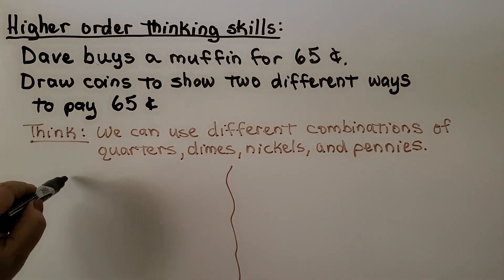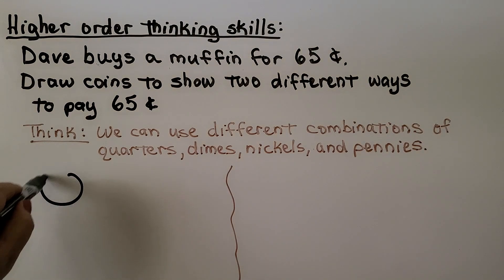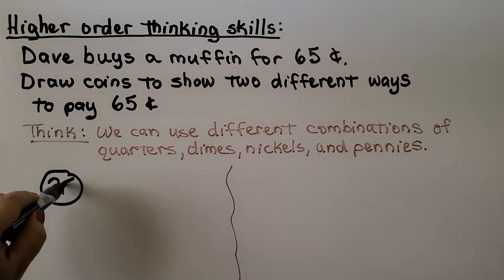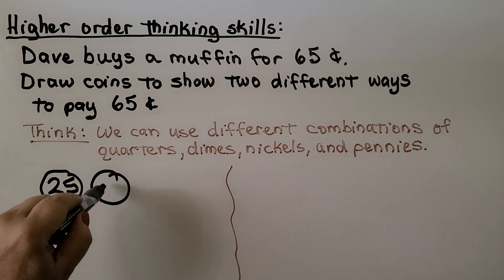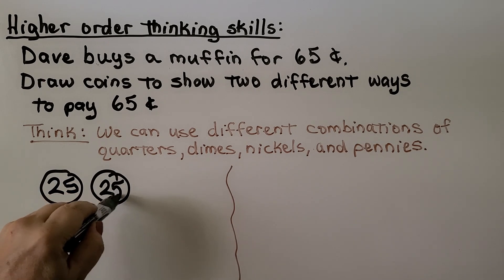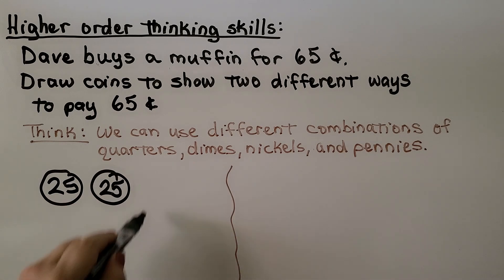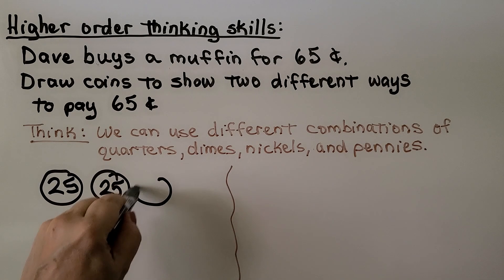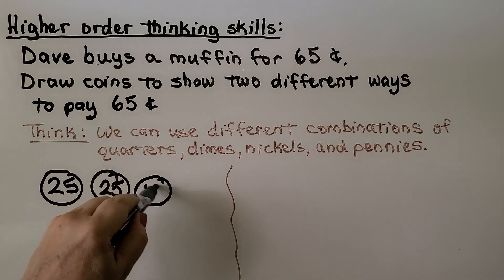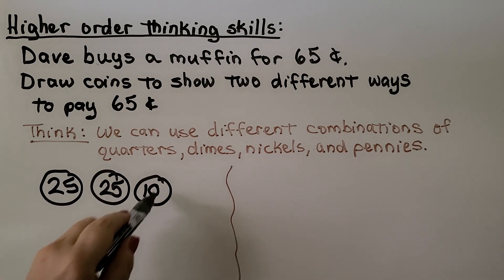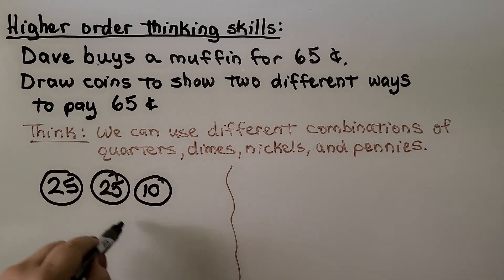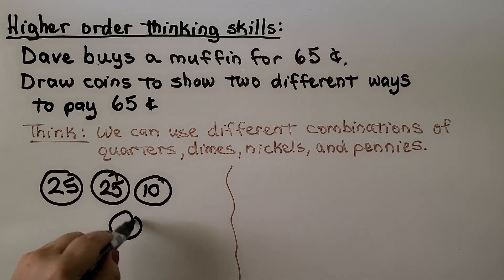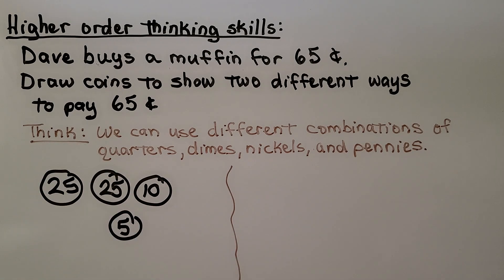Right away, I can think of two quarters making 50 cents. Then if I draw a dime for 10 cents, I'm at 60. Now I just need to draw a nickel — that would be 65 cents.